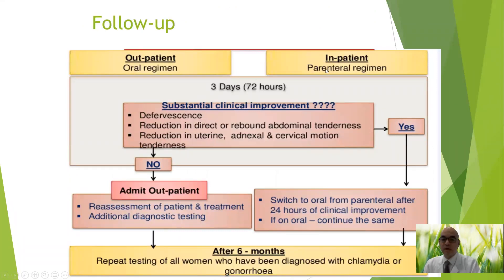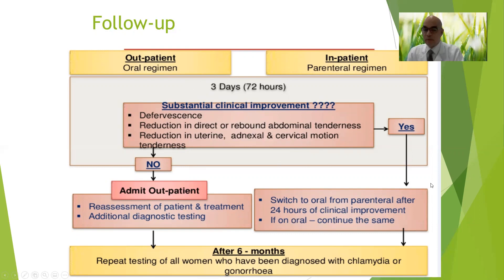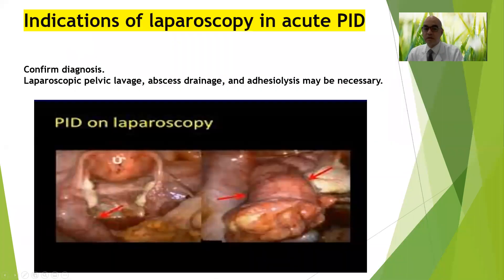After at least 24 hours of clinical improvement, switch from parenteral to oral treatment and continue the same oral regimen. Repeat testing of all women diagnosed with chlamydia and gonorrhea at minimum at six months.